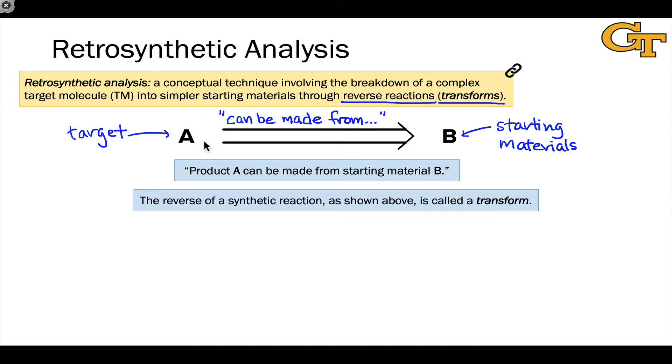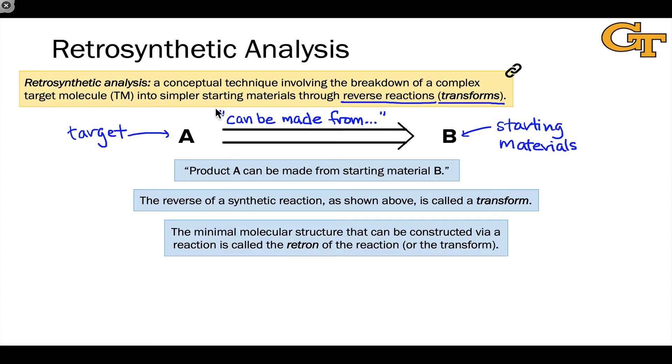Now, the target A contains some structure within it that was made by the reaction. The reaction of the starting materials B produces some new structure in the target A. And the minimal structure that is produced by this reaction is what's called the retron of this reaction. This is a bit of a difficult thing to get a handle on without looking at a specific example.